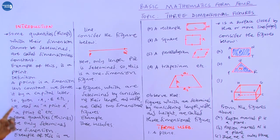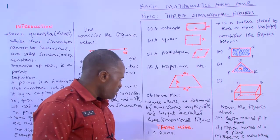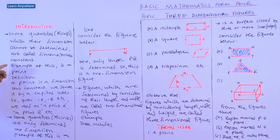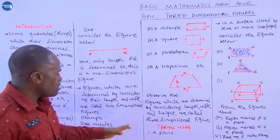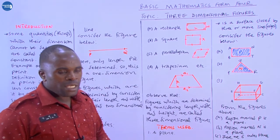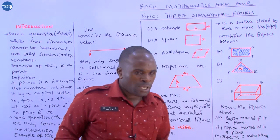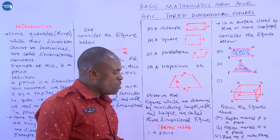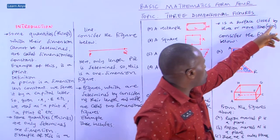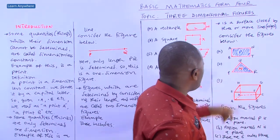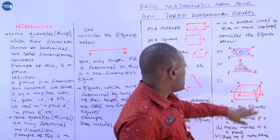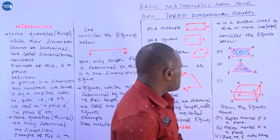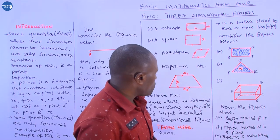The first important term is a plane. A point and a line are also useful terms we will check. A plane is a surface enclosed by three or more edges or lines. For example, the open surface of a rectangle is a plane. The figure marked P is a plane, and the figure marked N is a plane for the triangle.